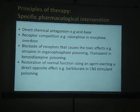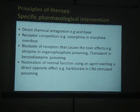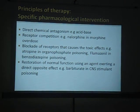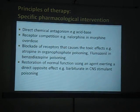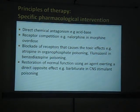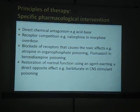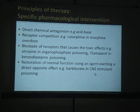Blockade of receptors that cause toxic effects - for example, atropine in organophosphorus poisoning, flumazenil in benzodiazepine poisoning. But for barbiturates, we do not have an antidote and must go for hemodialysis. For benzodiazepines, we have the antidote flumazenil. Restoration of normal function can be achieved by use of direct opposite action. In barbiturate poisoning, for example, CNS depression is present and we can go for CNS stimulation with the help of aminophylline.